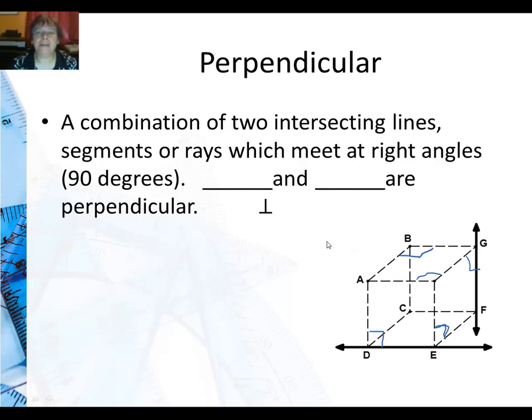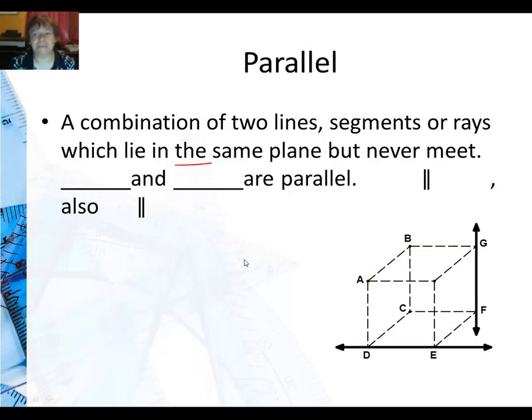So perpendicular means a combination of two intersecting lines, segments, or rays which meet at 90 degree angles. So in this picture, I'm going to look at AB and BG. And you can say that those two segments are perpendicular. Another thing we have is this symbol, which looks like an upside down T. That is the symbol for perpendicular. So the other way to write AB and BG are perpendicular, you can say AB is perpendicular to BG. And it saves a lot of space. Mathematicians don't like to write too much, more than they have to.